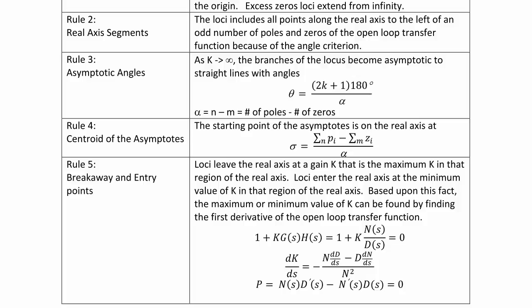Rule 4, Centroid of the Asymptotes: The starting point of the asymptotes is on the real axis at σ = (Σ poles - Σ zeros)/α.